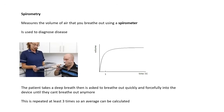Spirometry is measuring breathing. There are various machines — simple and more complicated — that can do it, but it's basically measuring the volume of air that you breathe in and breathe out using something called a spirometer. Very useful for diagnosing different types of disease, such as COPD, which we should know a lot about.